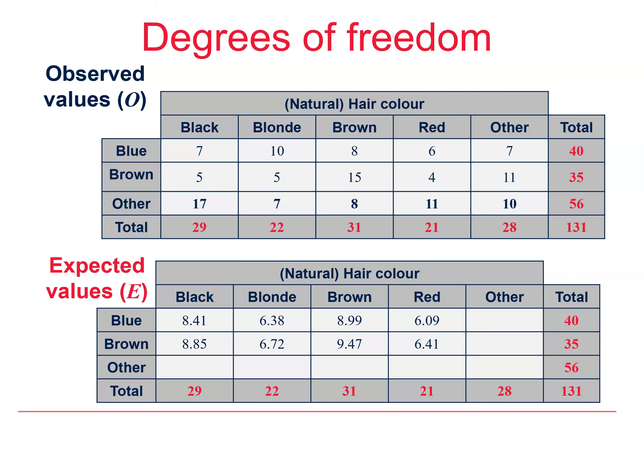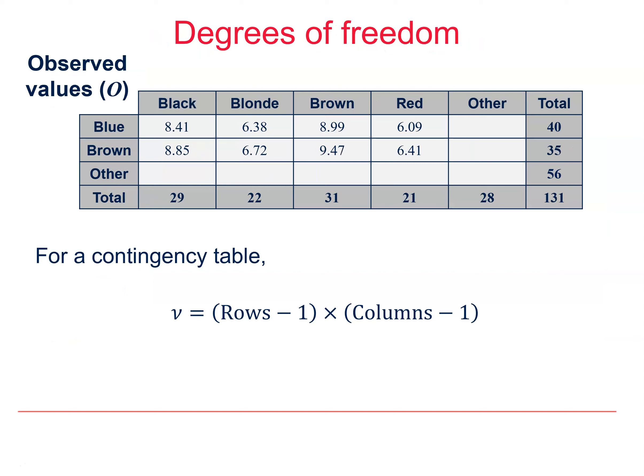So, the number of free variables is 2 rows of 4, which is 8. In general, for a contingency table, the bottom row and final column are dependent on the totals. So, the number of degrees of freedom is what you have left: 1 less than the number of rows multiplied by 1 less than the number of columns.